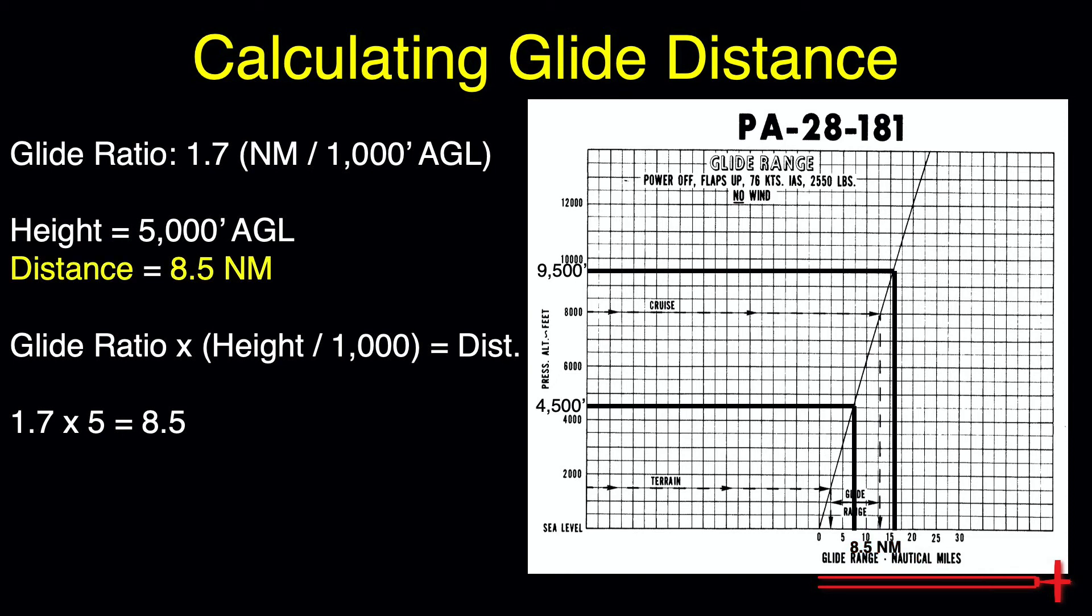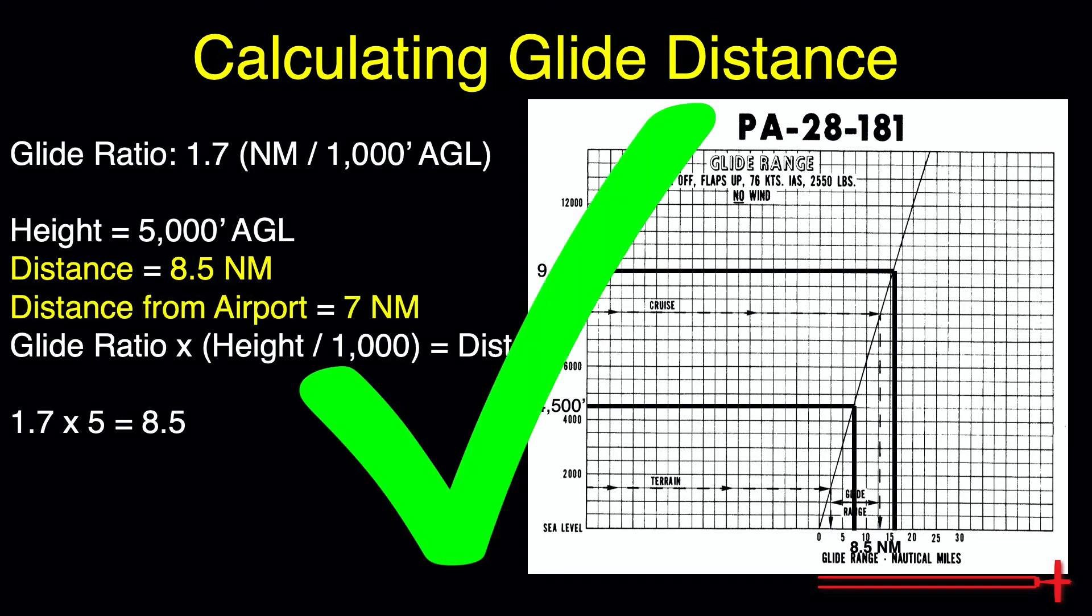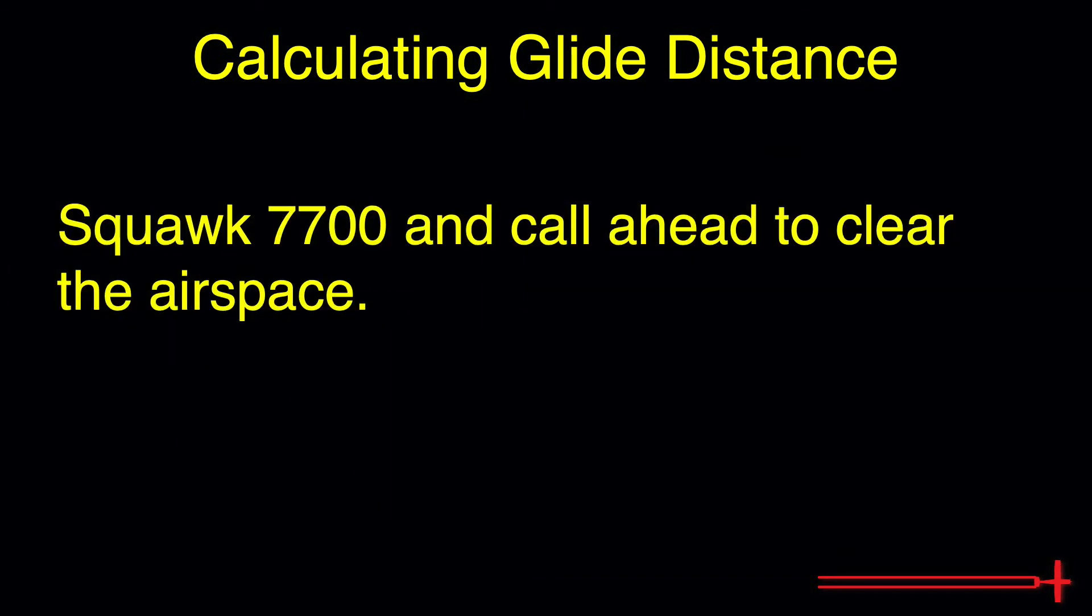In our example problem, we found ourselves 7 nautical miles from the nearest airport, which means we should make it there with a favorable amount of altitude to spare. At this point, we should not hesitate to turn towards the airport if we haven't already, and now would be a good time to squawk 7700 and call ahead to let anybody in the area know to clear the airspace for us.